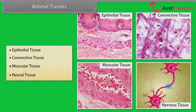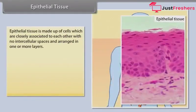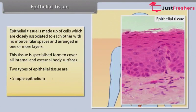Let's know about them in detail. Epithelial tissue is made up of cells which are closely associated to each other, with no intercellular spaces and arranged in one or more layers. This tissue is specialized to cover all internal and external body surfaces. The two types of epithelial tissues are simple epithelium and compound epithelium.